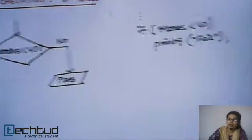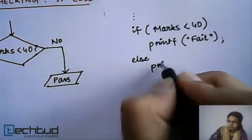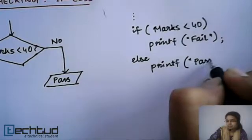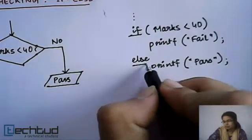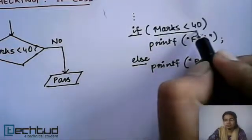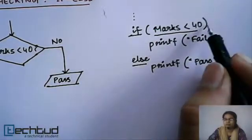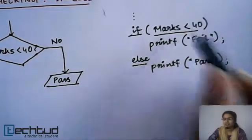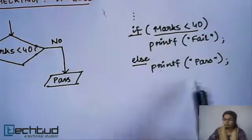And if it's false, whatever you want to do you write after the 'else' keyword. So 'if' is a keyword and 'else' is another keyword. After 'if', within the pair of parentheses, you write your condition. If the condition is true, the statement immediately after the if line will be executed.